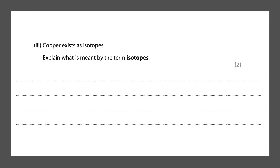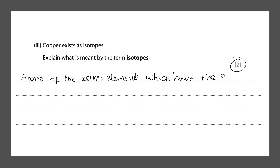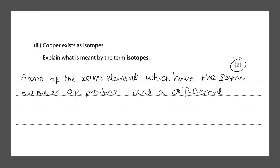Remember, an isotope has the same number of protons and electrons but a different mass number — a different number of neutrons. That gives you one mark. Next question: copper exists as isotopes. Explain what is meant by the term isotopes. You have to write this answer out and that will give you two marks. Atoms of the same element which have the same number of protons and a different number of neutrons. The first mark comes for saying atoms of the same element with the same number of protons, and the second mark for saying they have a different number of neutrons.